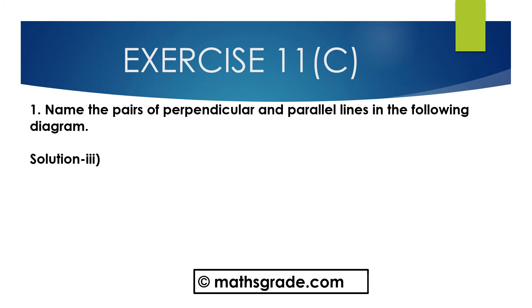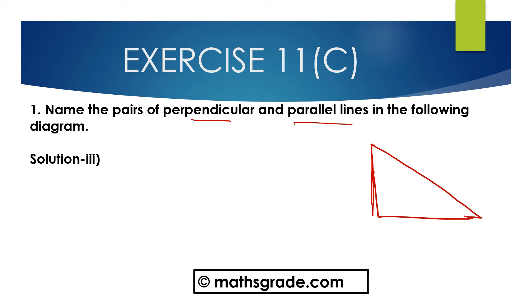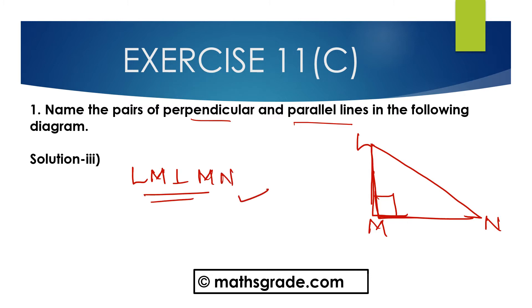Now question number 3: Name the pairs of perpendicular and parallel lines of the given diagram. First draw the given diagram. This is L, M, and N. Here there are no parallel lines, only perpendicular lines. LM is perpendicular to MN. There are no parallel lines.